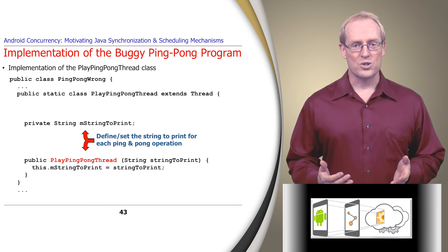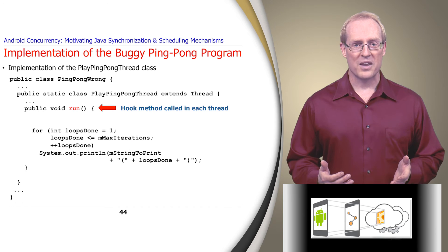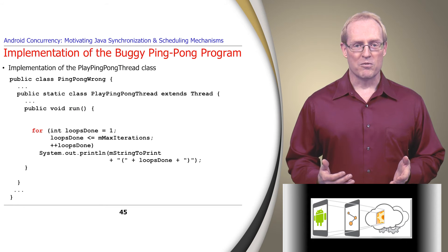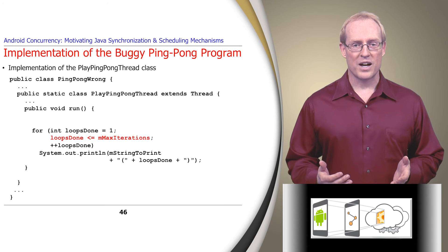The play ping-pong thread constructor stores a string to print for each ping and pong operation. The play ping-pong thread run hook method contains a loop that performs the ping-pong algorithm, which iterates for the designated number of times and prints some information to the console.